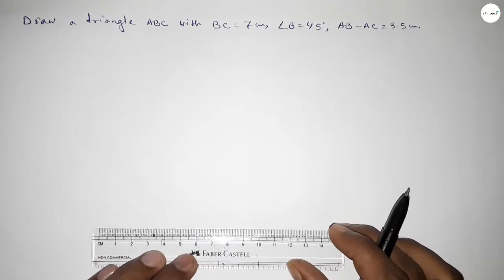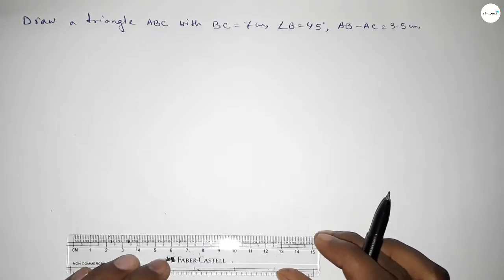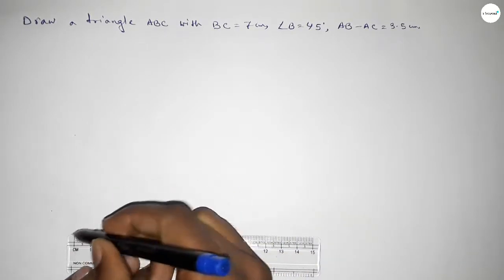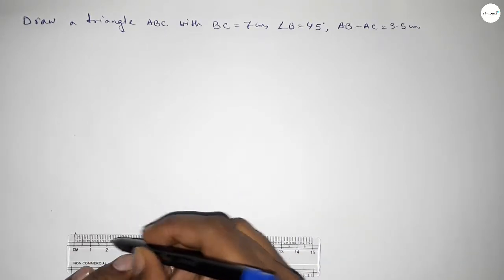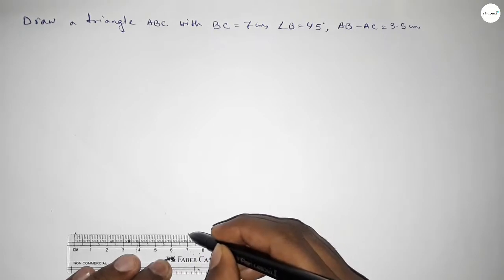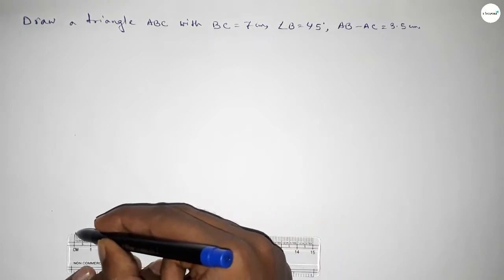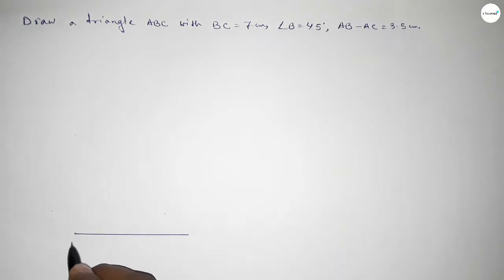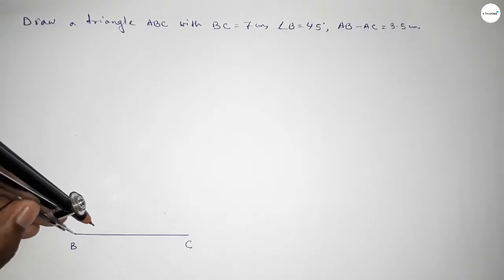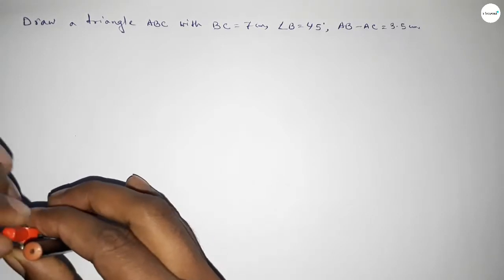First of all, we have to draw a line of length 7 centimeters. This is 7 centimeters, taking here point B and here point C. Now we have to draw a 45 degree angle on point B.